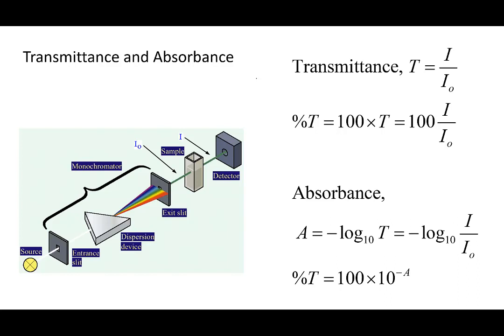Transmittance is defined as the ratio of the light getting out of the sample to what goes in — it's the fraction of the light that passes through the sample. Percent transmittance is 100 times that fraction. Absorbance is defined as minus the base-10 log of the transmittance, which equals minus the base-10 log of I divided by I₀.